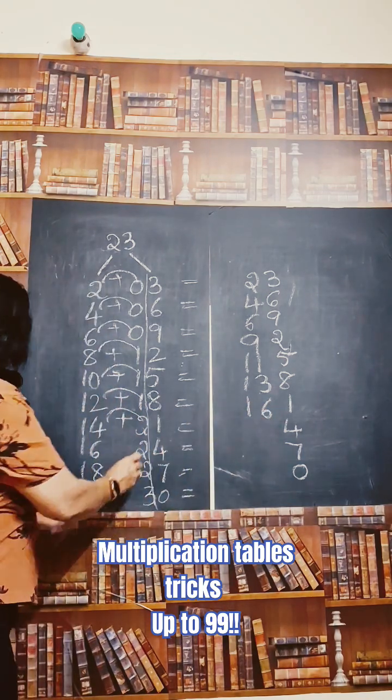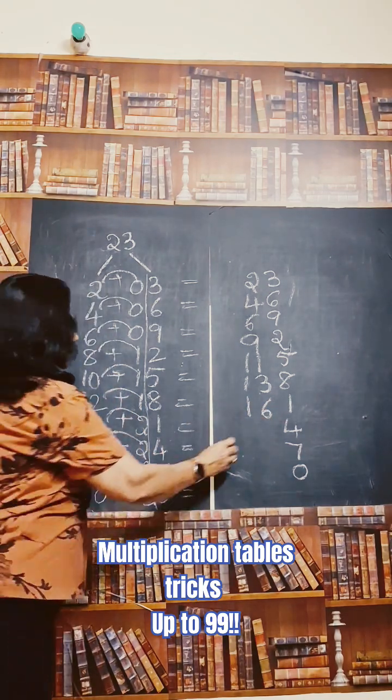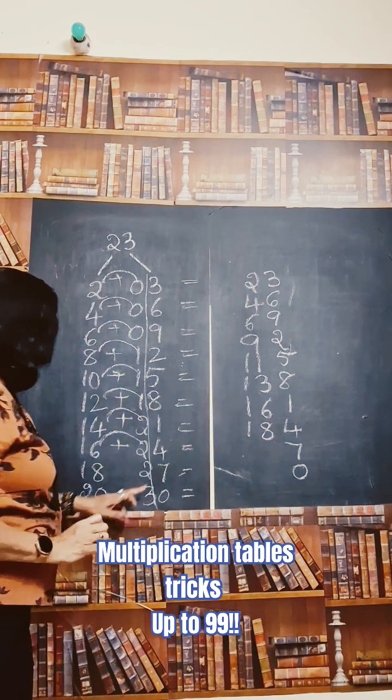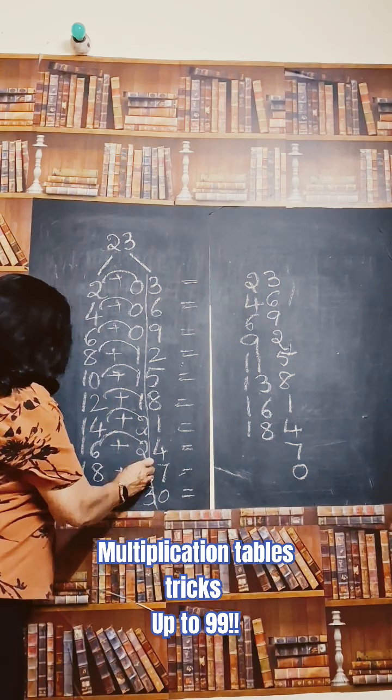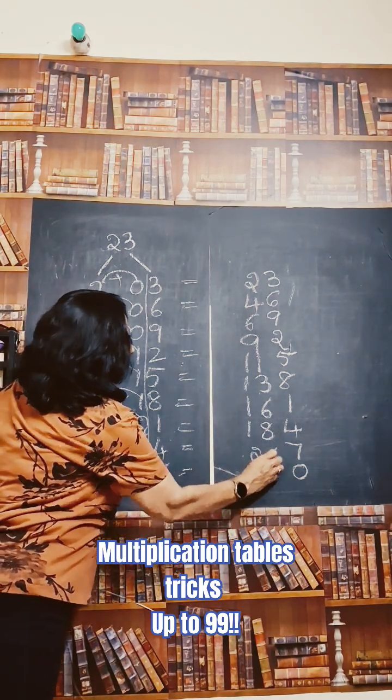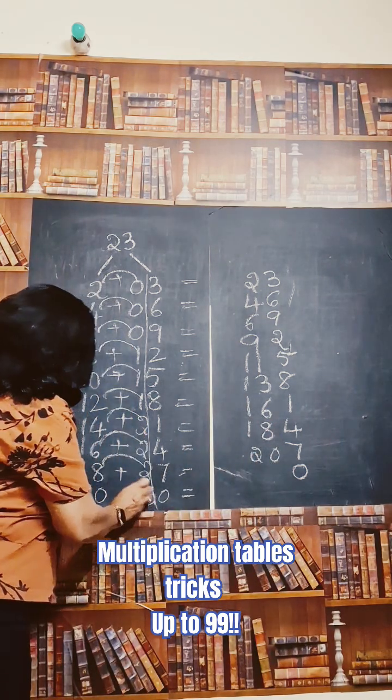2 plus 16, that's 18. 2 plus 18, and that is 20. And 3 plus 20, the last one.